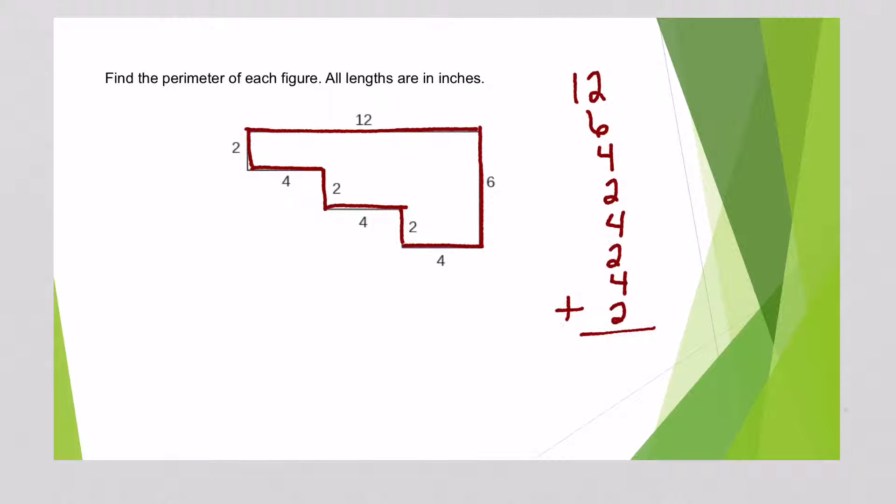Adding all those up, 2 and 6 is 8, 8 and 4 is 12, 12 and 2 is 14, 14 and 4 is 18, 18 and 2 is 20, 20 and 4 is 24, 24 and 2 is 26. I'm going to put the 6 right here and I'm going to carry the 2, and then I've got to add the 2 and the 1 and I get 3. So this thing is 36 inches.